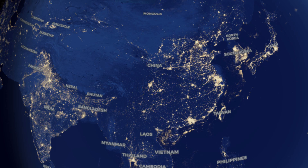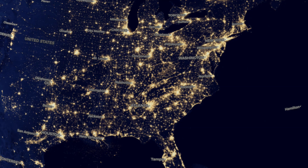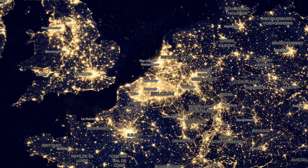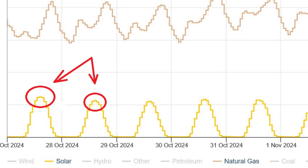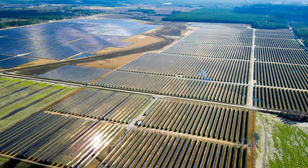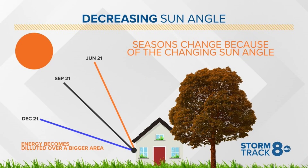The world currently averages about 3.5 terawatts of electricity demand across all global power grids at any given time. You might assume you could simply build 3.5 terawatts of solar capacity — but that's not the case. Even if you gave solar all 12 hours of daylight, half the solar panels in the world will be in nighttime at any moment and not working. So in reality you'd have to build twice that amount — 7 terawatts — just to cover the day/night split.